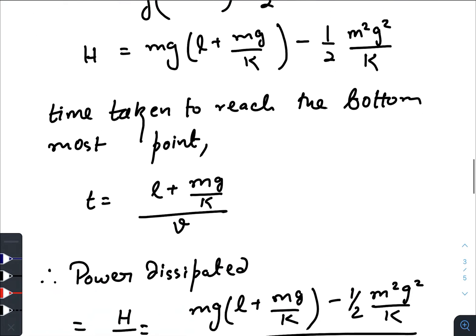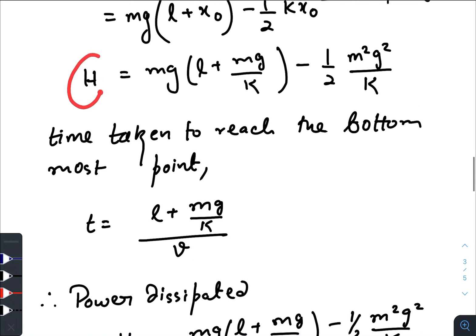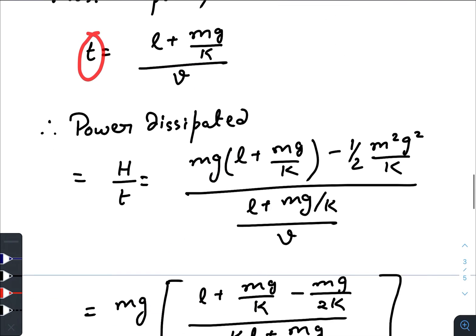But we need to find out the power, so we need to calculate the time taken by the bead to reach the bottommost point. The time taken will be total distance traveled by the bead divided by the speed of the bead. Now just divide H by T and you will get the power dissipated.